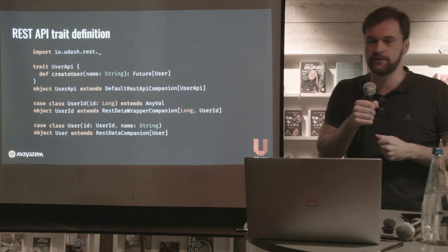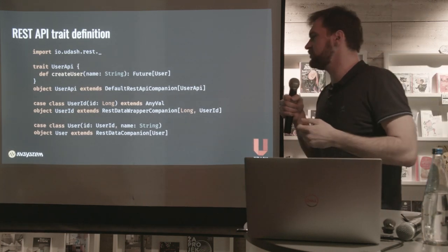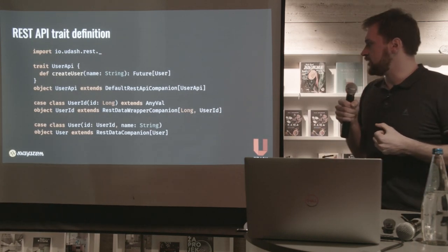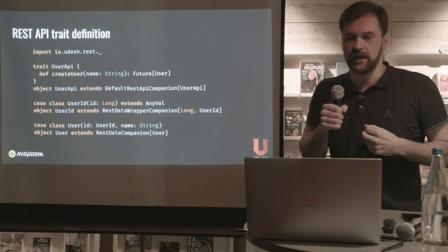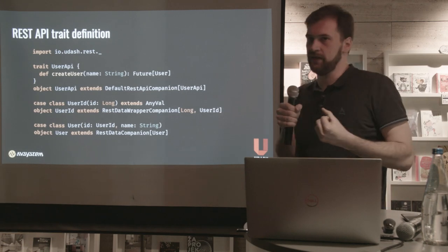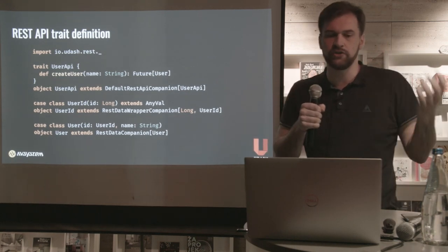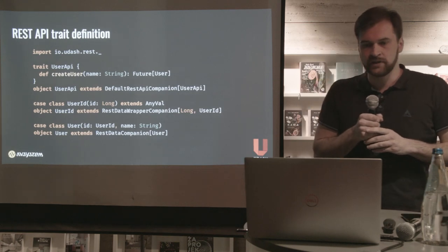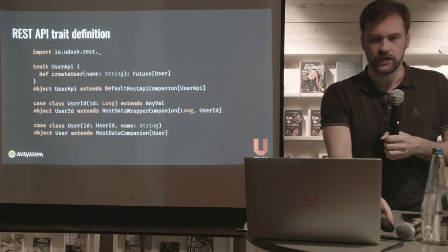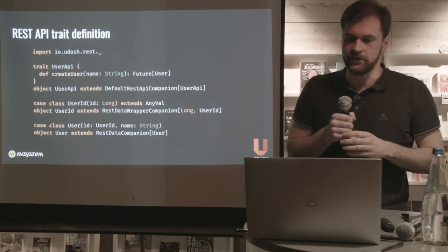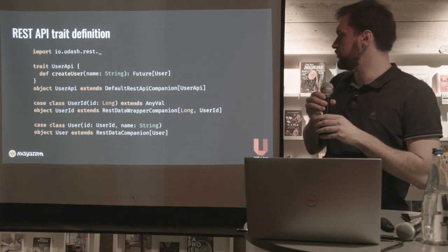Here's a simplistic example of how you would define a REST trait — a crude API with only the C part implemented: createUser. I've also defined the data types used by the trait. We have a User case class, and I've introduced a UserId because it's good practice in Scala to wrap primitive types to give them more meaningful names and gain type safety and more readable code. UserId is a value class, and we use it in User.